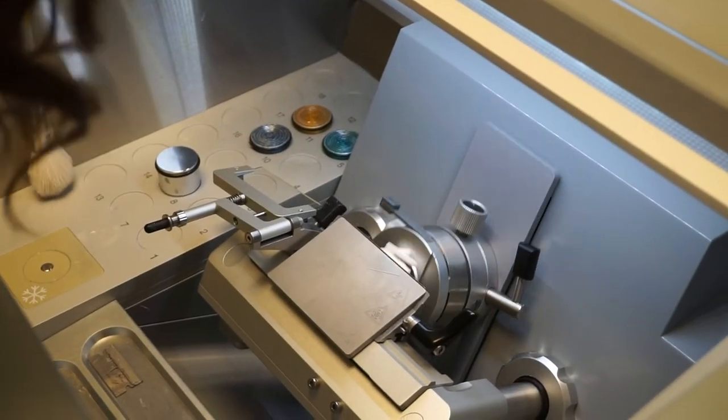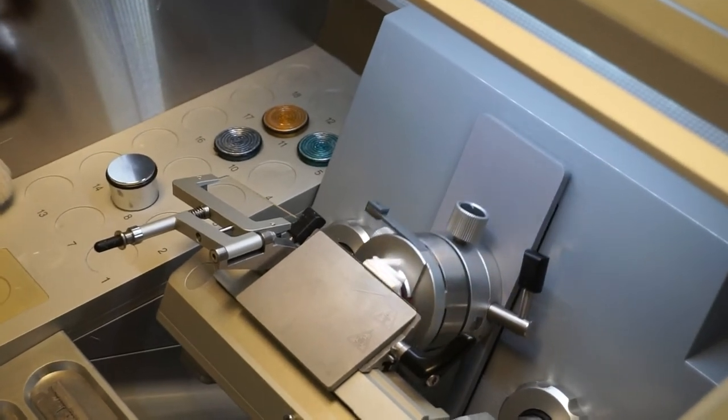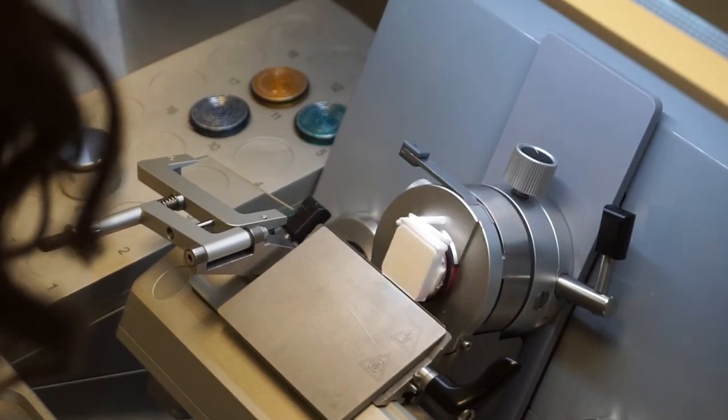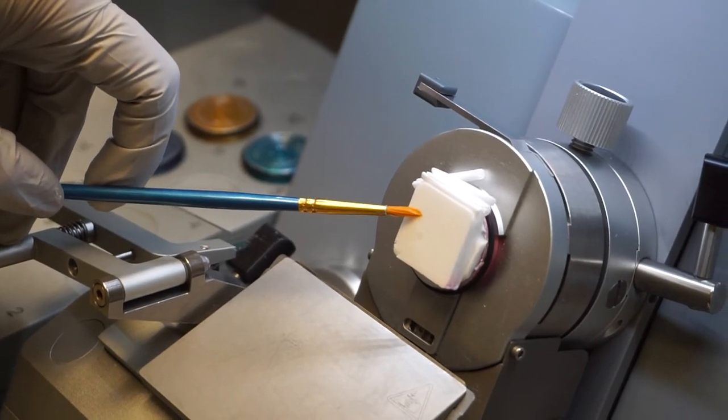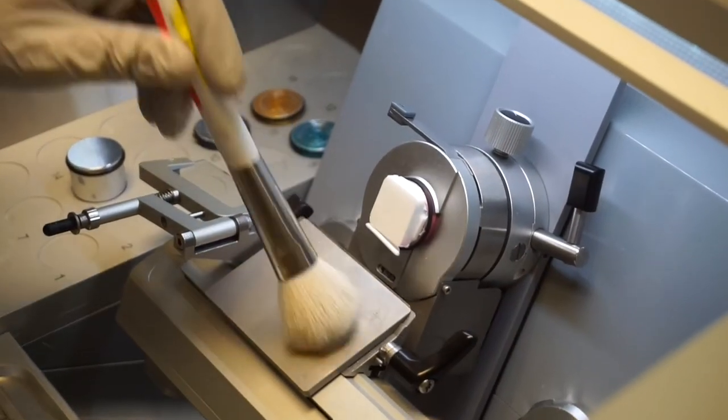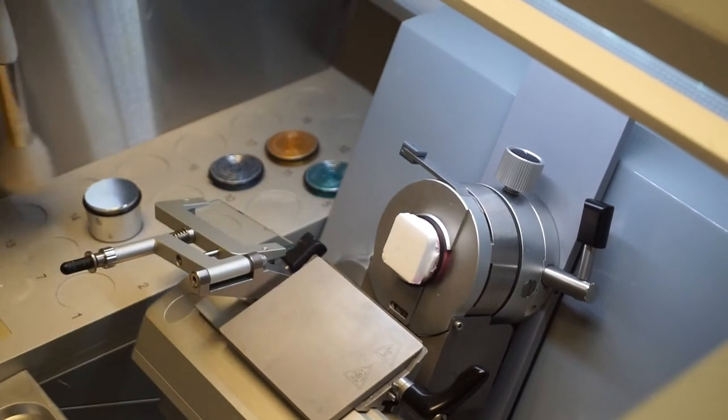Use the cryostat trim function to shave off excessive OCT. When samples start to become visible on the surface of the block, set the cutting thickness to the desired value and continue trimming until samples begin to be cut.